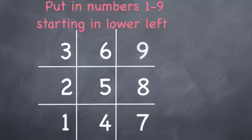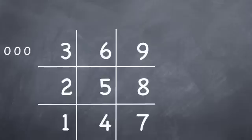Now we're going to add numbers in front of those. Those will be the tens digits. We'll add zeros in front of the three, the six, the nine.